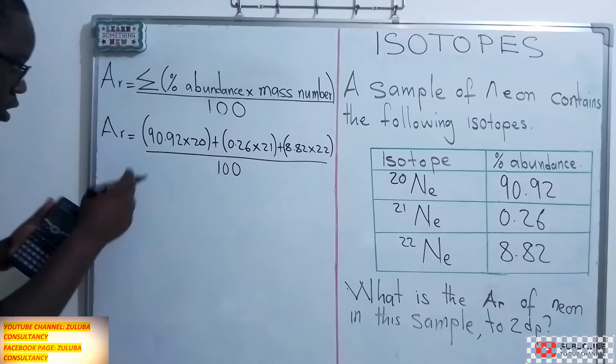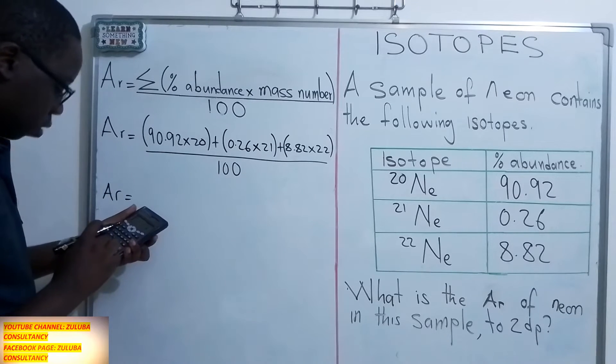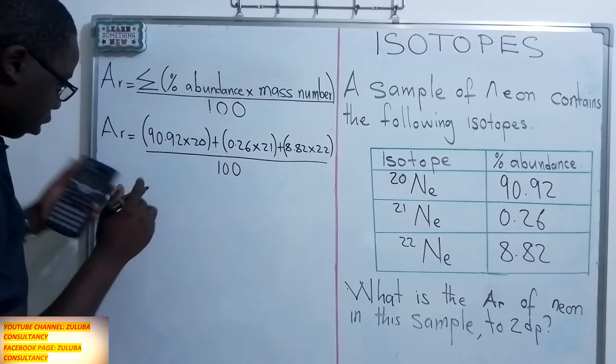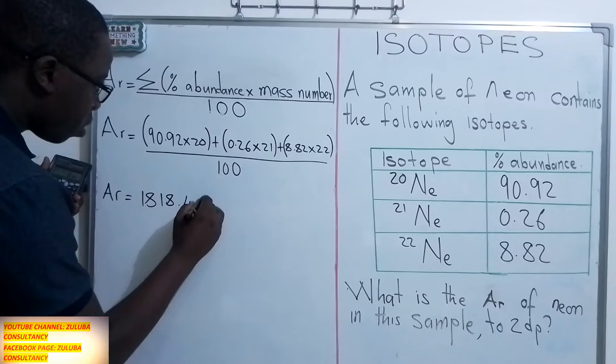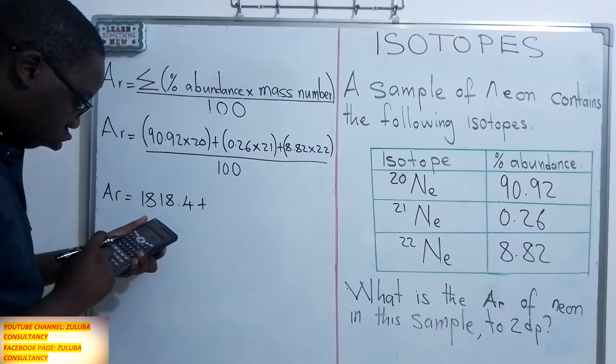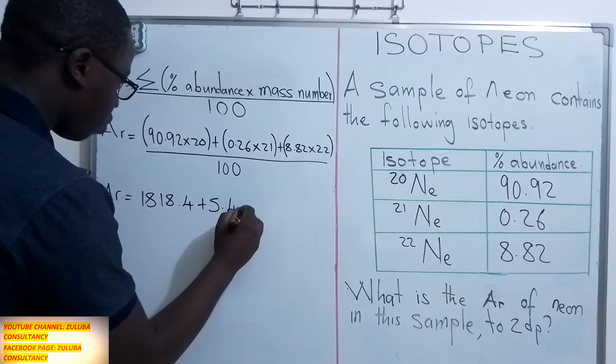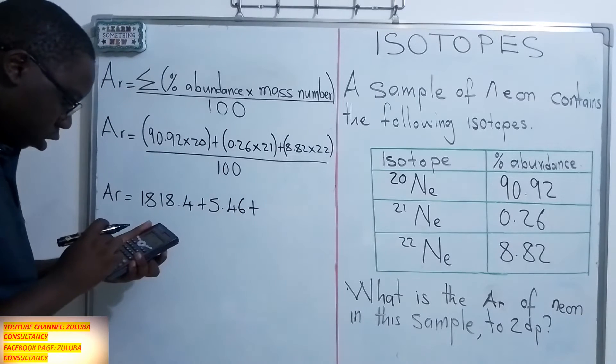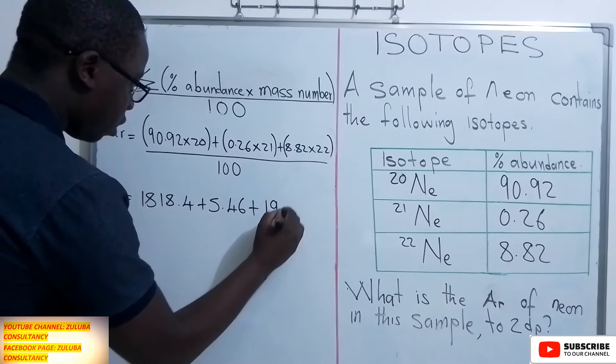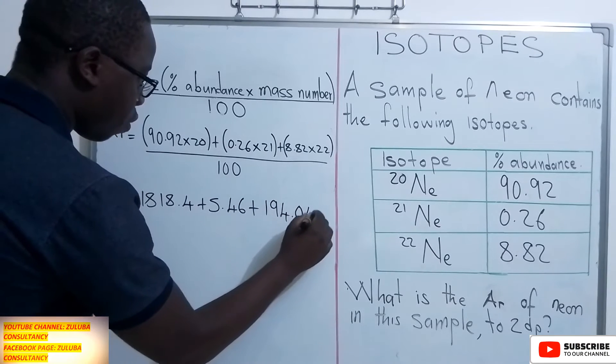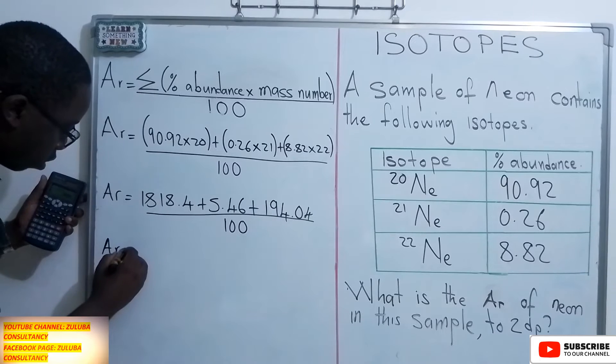So let's find what is on the numerator there. We are saying Ar is equal to 90.92 multiplied by 20, it is giving us 1,818.4 plus 0.26 multiplied by 21, it is giving us 5.46 plus 8.82 multiplied by 22, it is giving us 194.04. All this divided by 100.